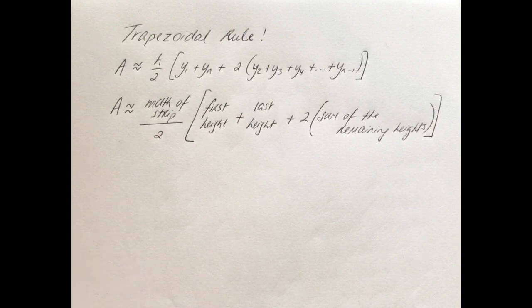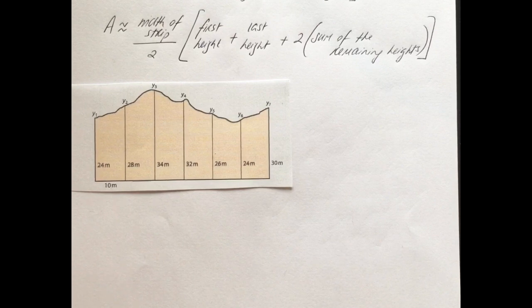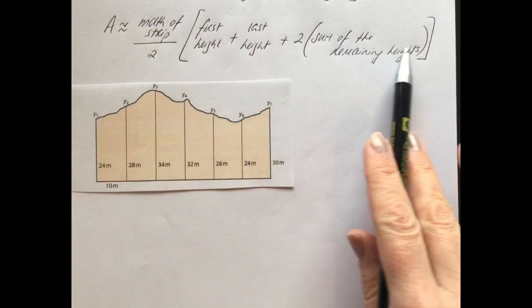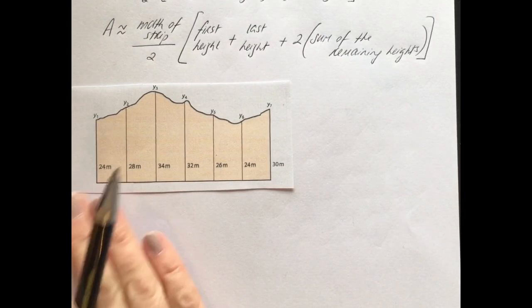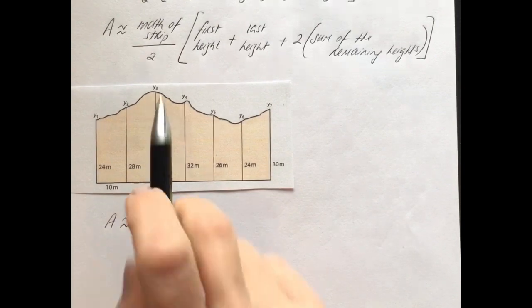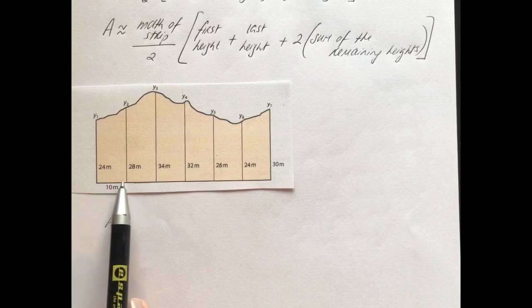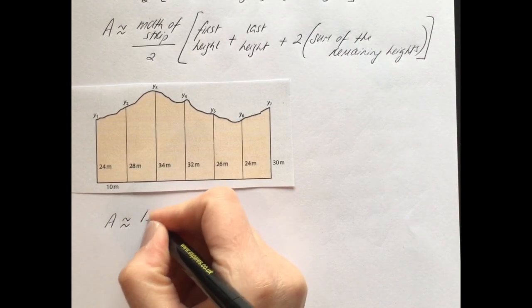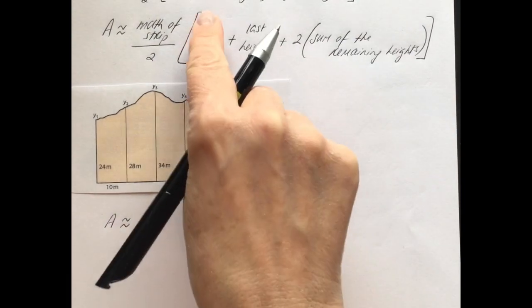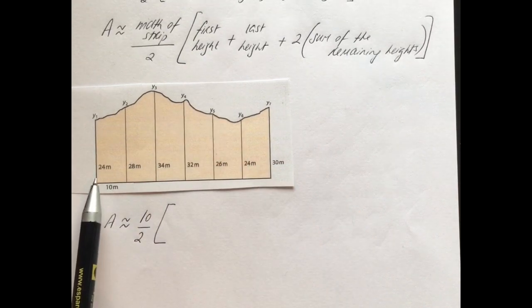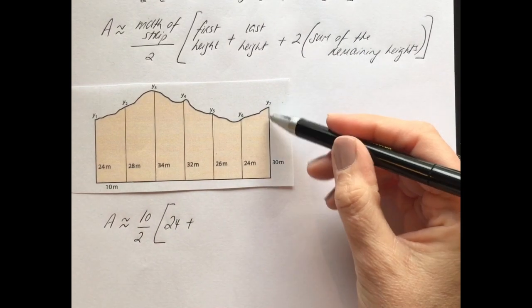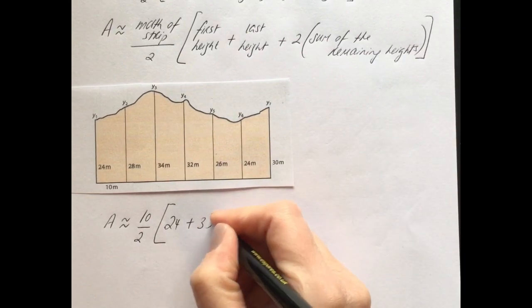Let's jump into an example. We're going to work out an approximation for the area of this plot of land using the trapezoidal rule. So the area is approximately equal to... the first thing to fill in is the width of the strip, which is 10 meters - it's always broken up into equal strips. So we have 10 divided by 2, then open the square bracket. The first height is 24, and the last height is 30.